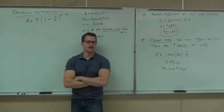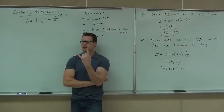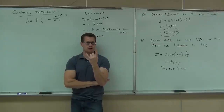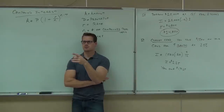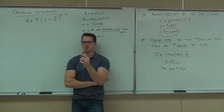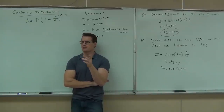Annually means once a year, so N equals 1. Semi-annually means twice a year, N equals 2. Quarterly is four times a year — like four quarters in a dollar — N equals 4. Monthly means interest is added every month; there are 12 months in a year, so N equals 12. Weekly: there are 52 weeks in a year, so N equals 52. Daily: there are 365 days in a year, so you'd get interest every single day — N equals 365.